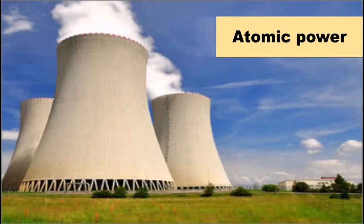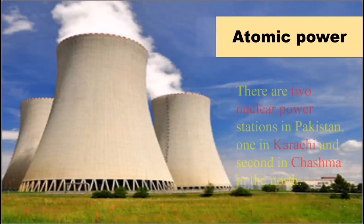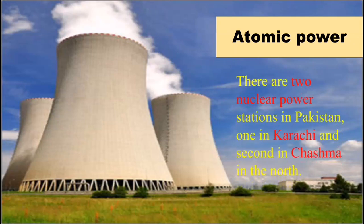The next power is Atomic Power. Nuclear or atomic power stations are very expensive to build. That is why only a few countries in the world have developed this power. There are two nuclear power stations in Pakistan — one is in Karachi and the second is in Cheshma in the north.